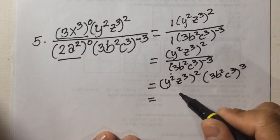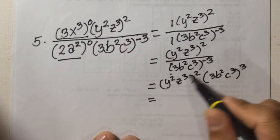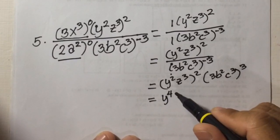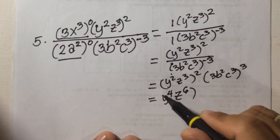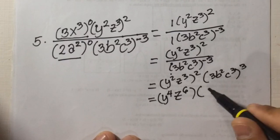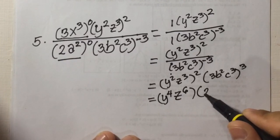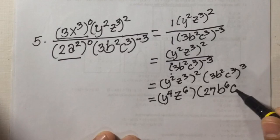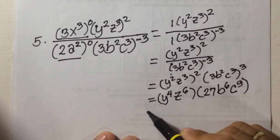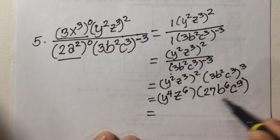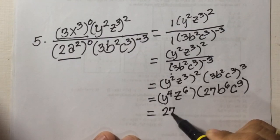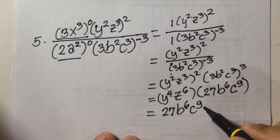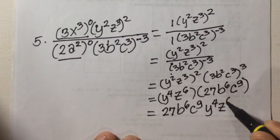Applying the power of a product rule: y squared squared becomes y to the power of 4; z cubed squared becomes z to the power of 6. Then 3 cubed is 3 times 3 times 3, which is 27; b squared cubed becomes b to the power of 6; c cubed cubed becomes c to the power of 9. Arranging the factors, our final answer is 27 b to the power of 6, c to the power of 9, y to the power of 4, z to the power of 6.